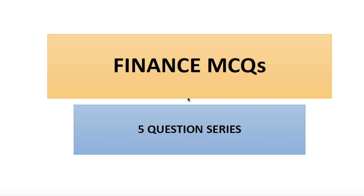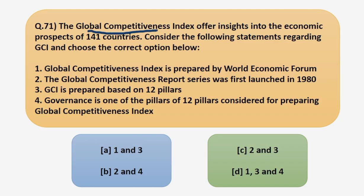Now starting with the first question for today. The Global Competitiveness Index offers insights into the economic prospects of 141 countries. Consider the following statements regarding GCI and choose the correct option below. So in the next slide we are going to discuss what Global Competitiveness Index is and some facts related to it.